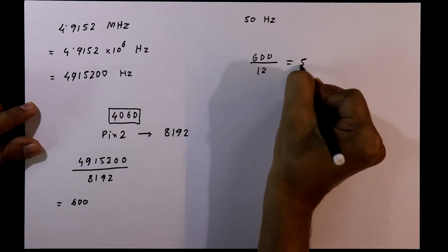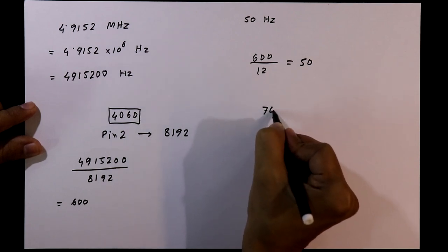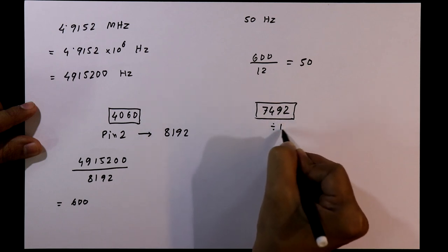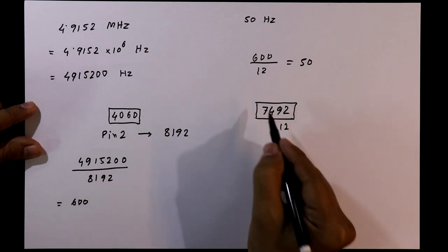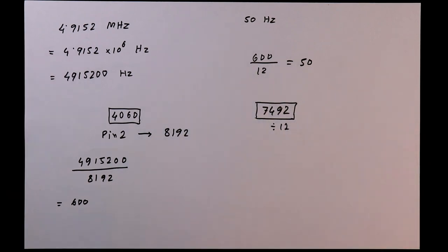So that we will get 50. Now we have an IC, the 7492, which is a divide by 12 IC. So by using this IC, we will get 50 Hz. So this is the basic calculation for this circuit.